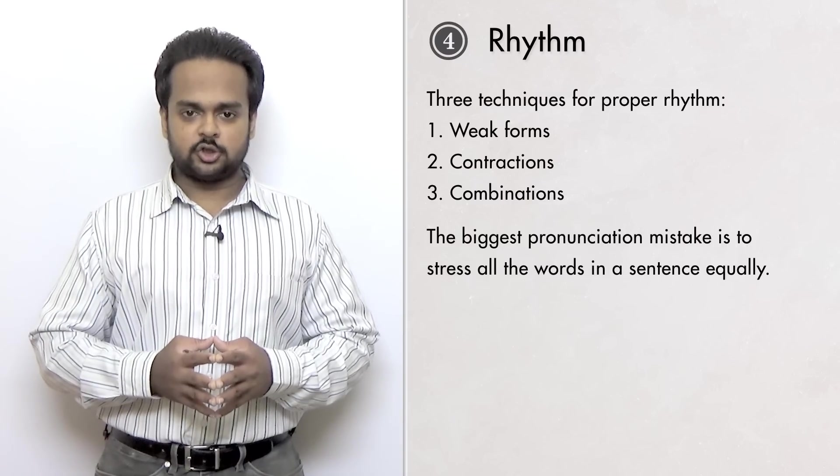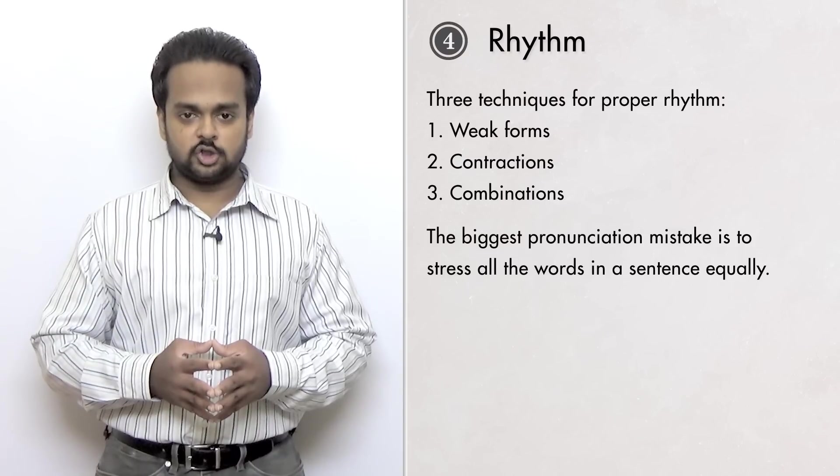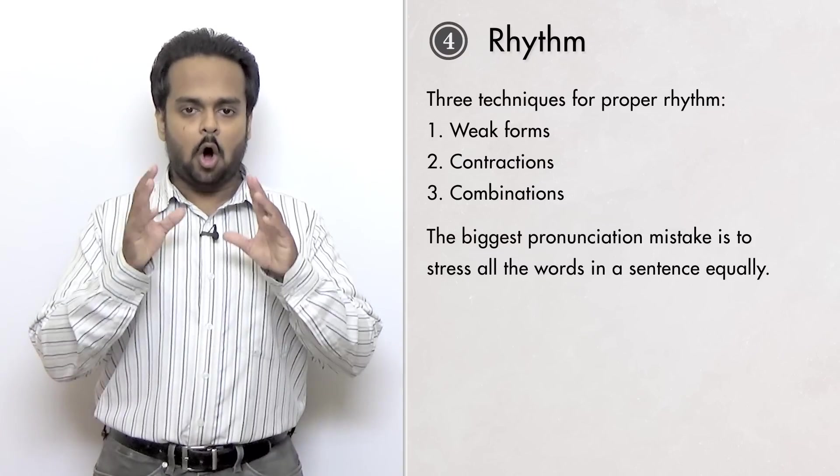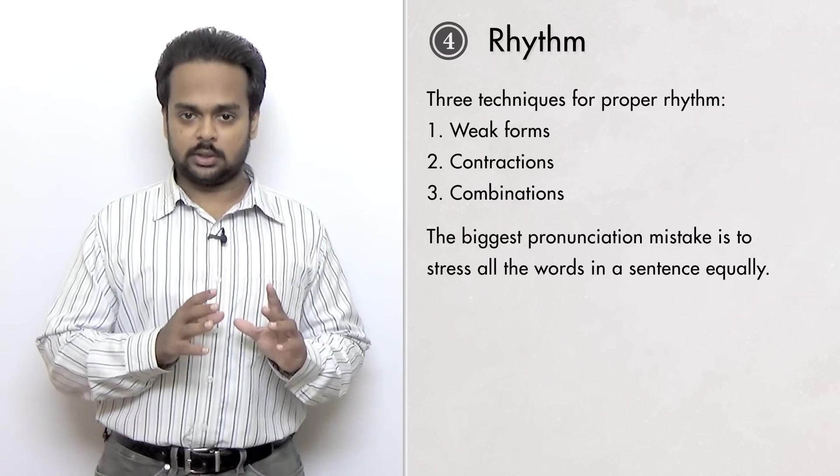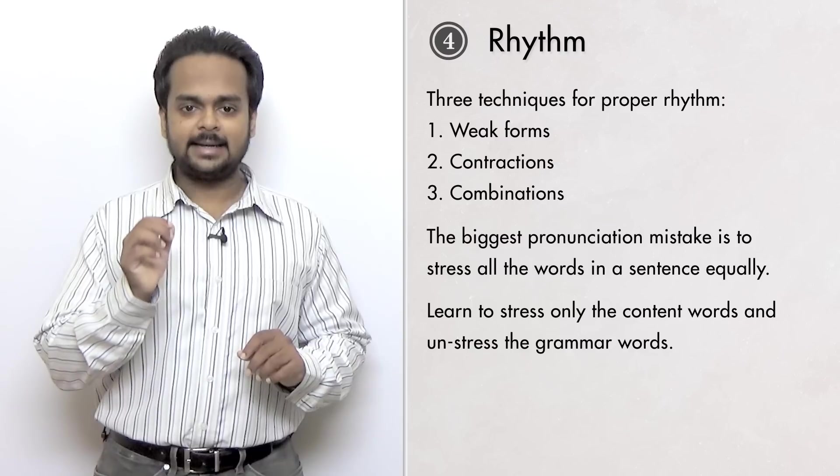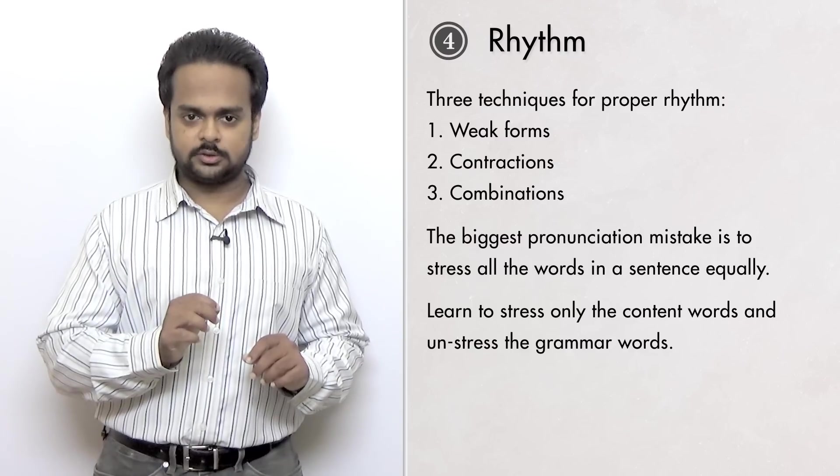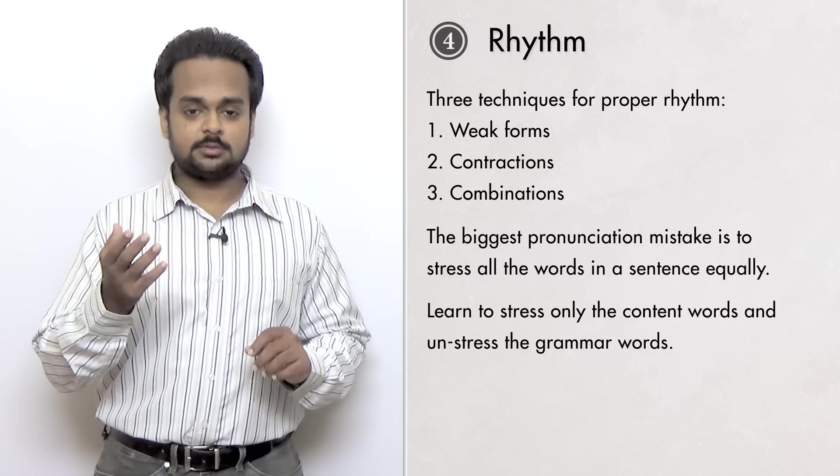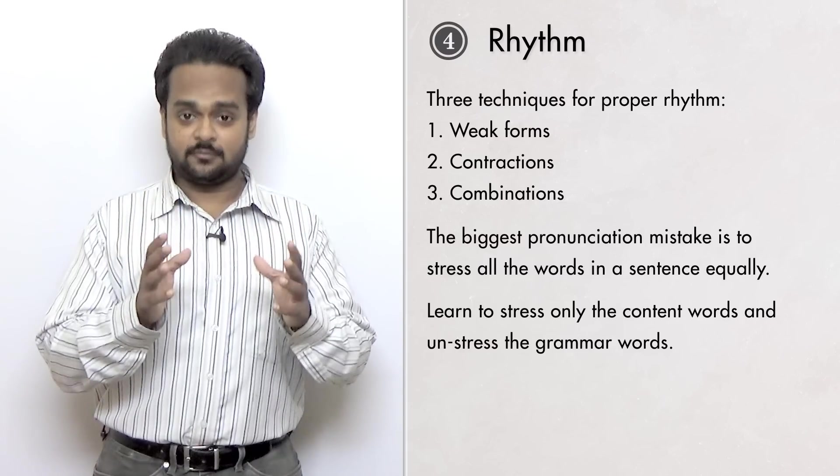The biggest pronunciation mistake that learners of English make is to stress all the words in a sentence equally. This is wrong. You should learn to stress only the content words and unstress the grammar words. Rhythm is also sometimes called sentence stress for this reason.